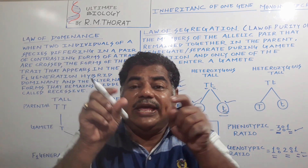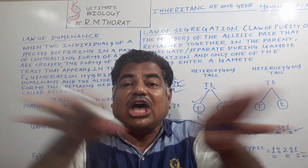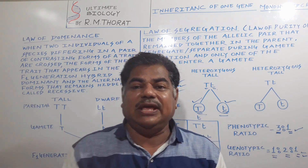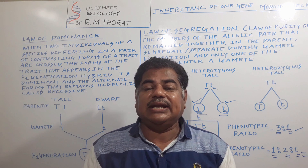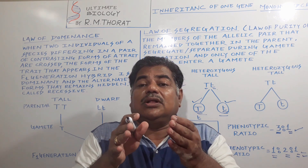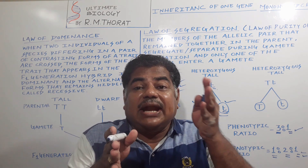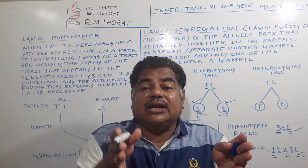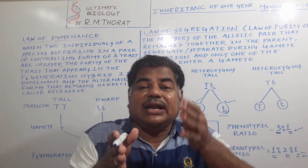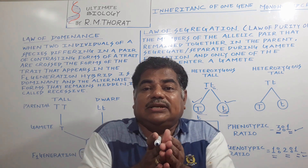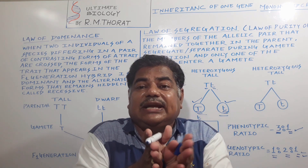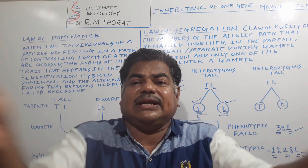When pollen grains form — from one cell, four pollen grains form — at that time the dominant factor and recessive factor get separated and segregate. This was confirmed even though at that period the knowledge of nucleus, chromosomes, genes, and DNA as genetic material was not yet discovered.